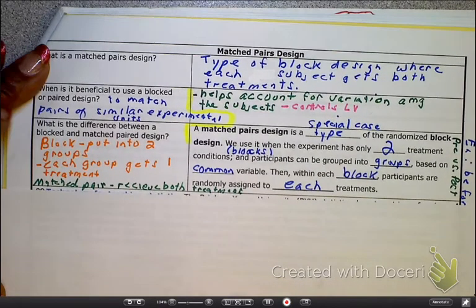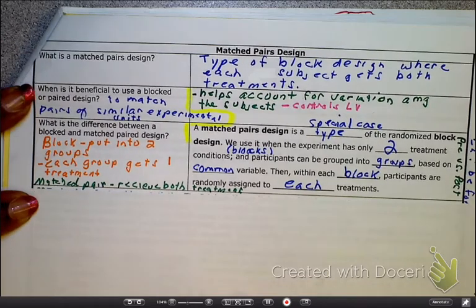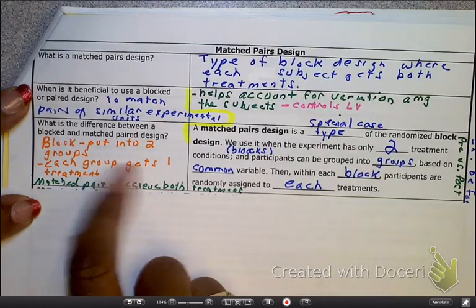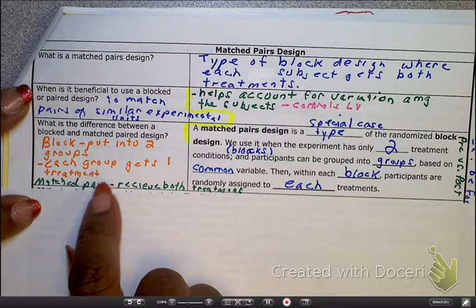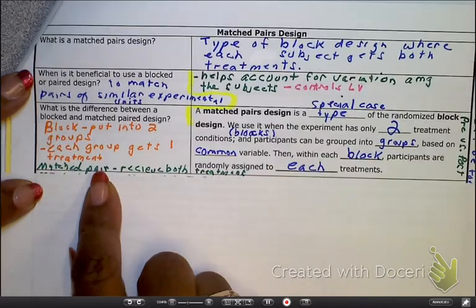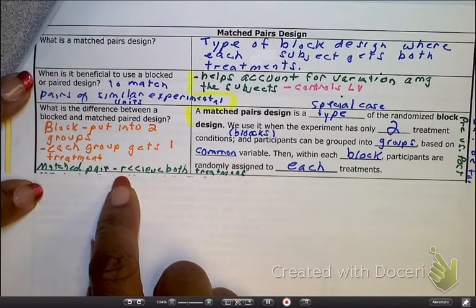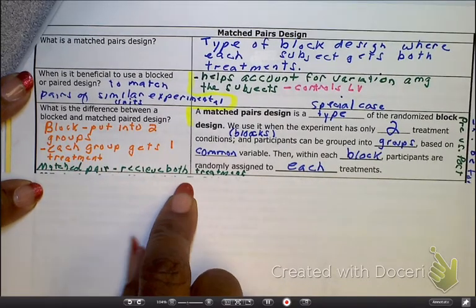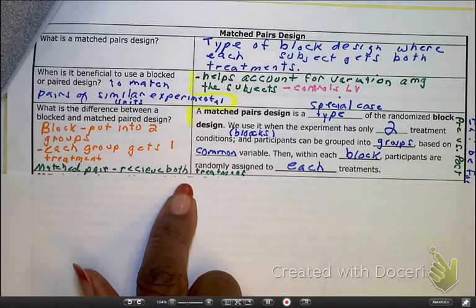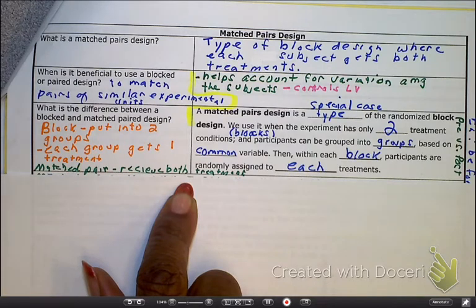Now as I go to this next part, what is the difference between a block and a matched pair? With a block, you put them into two groups and each group gets one treatment. For the matched pair, you put them into groups and then they get both treatments. So let's say I want to compare a Ford to a Chevy, both American-made cars. Oh Ford not so much, they all moved to Mexico, right? But let's just continue to dream and say they both are American-made cars.